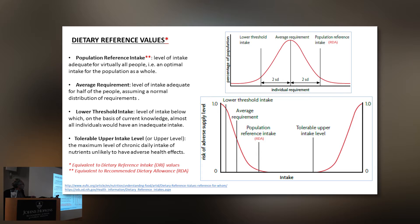The RDA represents an optimal intake for the population as a whole, generated from individual values in databases. The average requirement intake is the level adequate for half the people assuming a normal distribution of requirements. There is also a lower threshold intake — below which almost all individuals would have an inadequate intake — and a tolerable upper intake level, which is the maximum level of chronic intake of that nutrient unlikely to have adverse health effects.